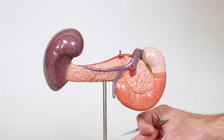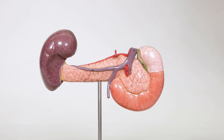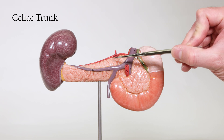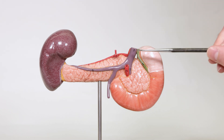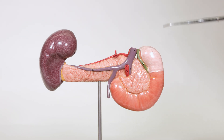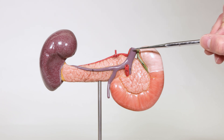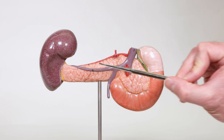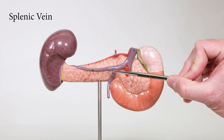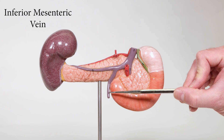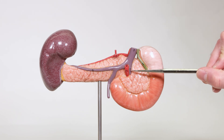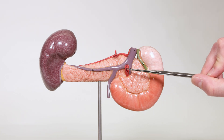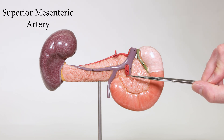If we spin this around to the posterior view, you can still see the celiac trunk coming out. You can then see a better view of the venous system here. We're going to have our hepatic portal vein right up here with the branches leading into it, the splenic vein right here, the inferior mesenteric vein, and a little bit of the superior mesenteric vein is visible here. You can still see part of the superior mesenteric artery right next to it.